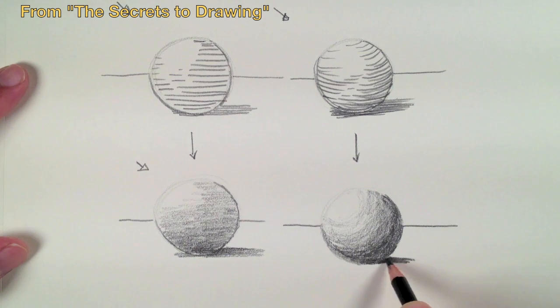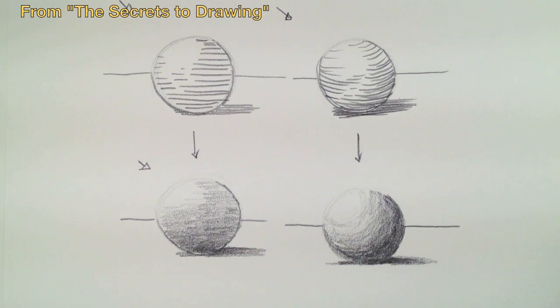So make sure that you use cross contour lines when you're adding any type of value or any type of shadowing or media to your surface.